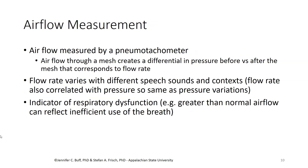Air flow is measured by a pneumotachometer. This uses a mesh that the air is pushed through; there's a higher pressure behind the mesh and a lower pressure on the other side, and the drop in pressure corresponds to the flow rate of the air through the mesh. Using this device, we found that flow rate varies with different speech sounds and in different contexts. The flow rate is fairly well correlated with pressure below the larynx, so we also know there are variations in pressure for different speech sounds in different contexts.